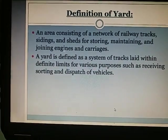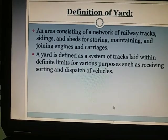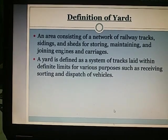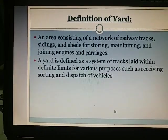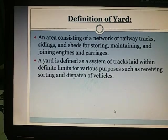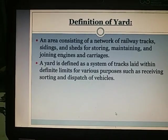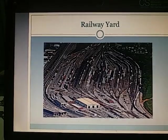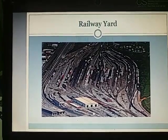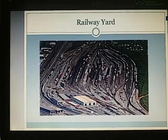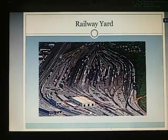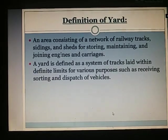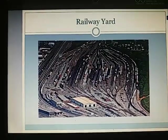Yards: An area consisting of a network of railway tracks, sidings, and sheds for storing, maintaining, and joining engines and carriages. A yard is defined as the system of tracks laid within definite limits for purposes such as receiving, sorting, and dispatch of vehicles. In railway yards, all trains come and stop; their bogies are sorted, received, dispatched, and engines joined.